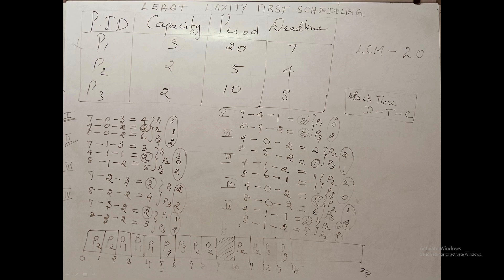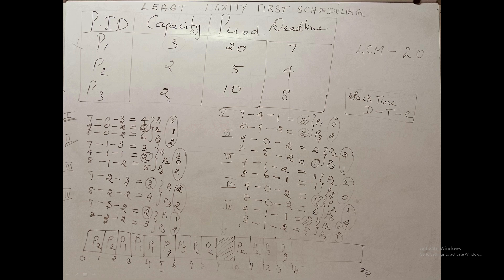P1 executes from T=2 to T=3. At the fourth iteration with T=3: P1 slack = 7 − 3 − 2 = 2, P3 slack = 8 − 3 − 2 = 3; P1 is selected again. At T=4: P1 slack = 2, P3 slack = 2 — a tie occurs. Since P1 is the currently executing process, P1 continues from T=4 to T=5, completing its total capacity of 3 units and finishing execution.